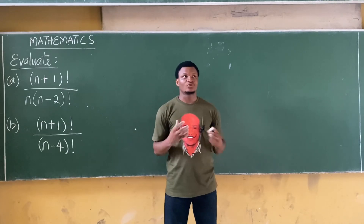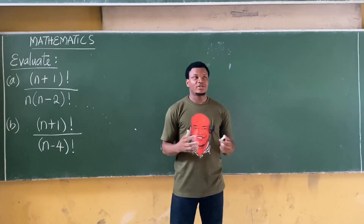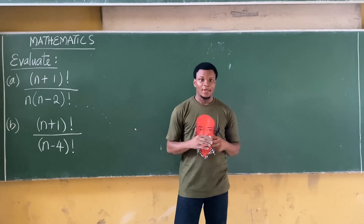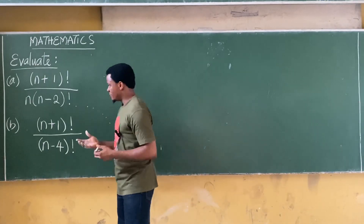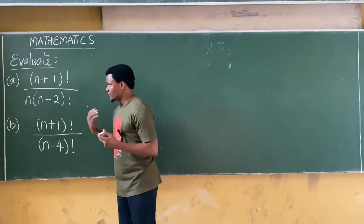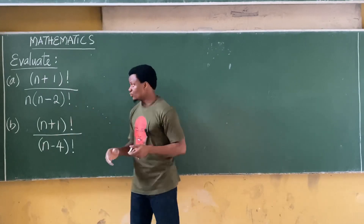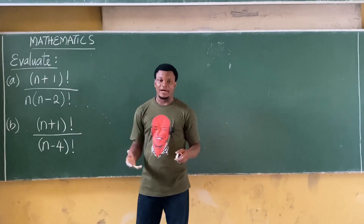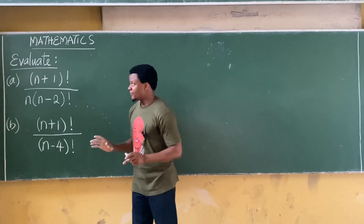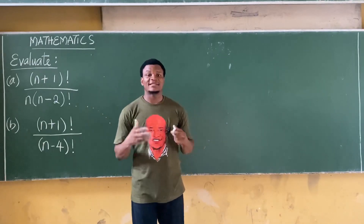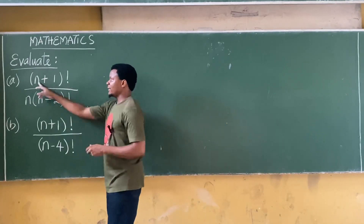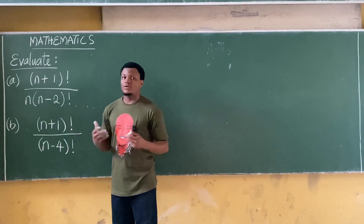Welcome to today's class. We'll be providing the solution to these questions on factorials. In our previous class we talked about how to simplify questions of this nature. The simple idea when it comes to simplifying is to express the bigger factorial in terms of the lesser factorial so they can cancel out. Now I have n+1 and n-2, so the question becomes which of these is the greater factorial.